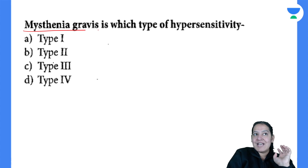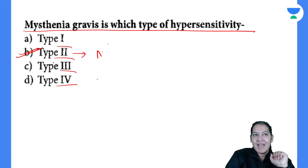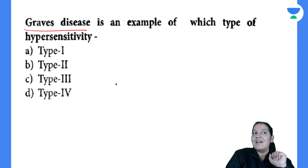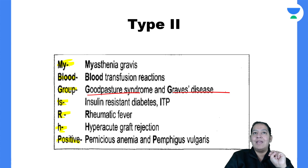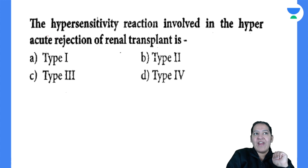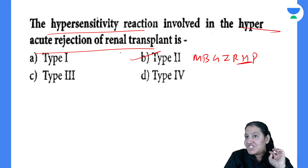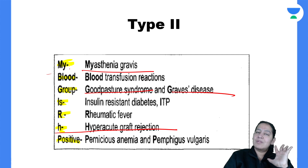Question 3: Myasthenia gravis is an example of which hypersensitivity? Apply all four mnemonics — the answer is type 2. 'My Blood Group Is RH Positive' — M is Myasthenia gravis. Question 4: Graves disease is an example of which hypersensitivity? Again type 2 — G in the mnemonic is two things: Goodpasture syndrome and Graves disease. Question 5: Hypersensitivity reaction in hyperacute graft transplant? Again type 2 — H is hyperacute graft rejection. This mnemonic is super important.